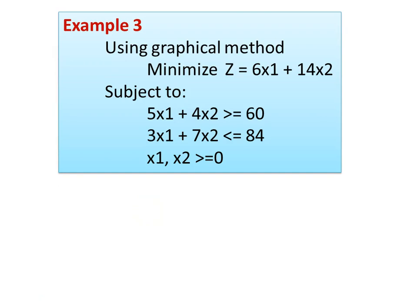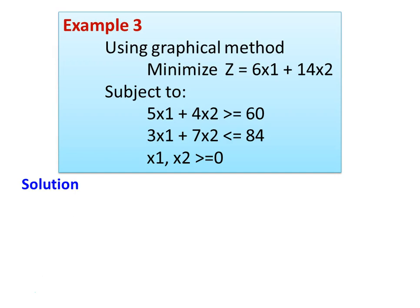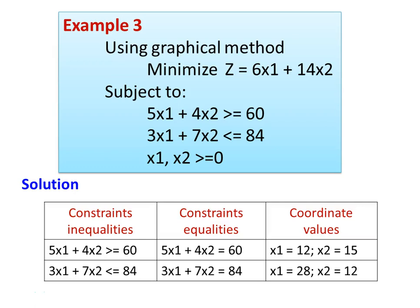We take another example — example number three. Using the graphical method, minimize Z equal to 6X1 plus 14X2, subject to the constraints: 5X1 plus 4X2 greater than or equal to 60, and 3X1 plus 7X2 less than or equal to 84, and X1, X2 are greater than or equal to 0. Converting to equalities and calculating coordinate values: for constraint 1, X1 equals 12 and X2 equals 15; for constraint 2, X1 equals 28 and X2 equals 12.